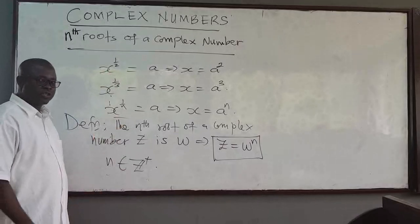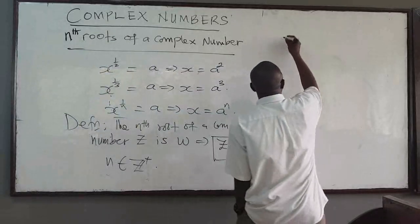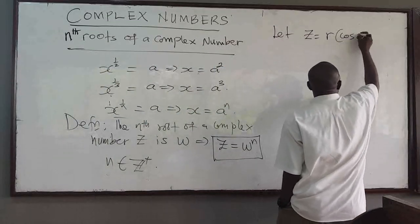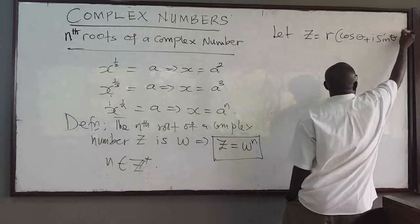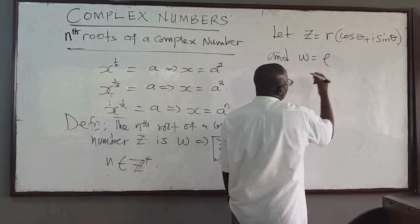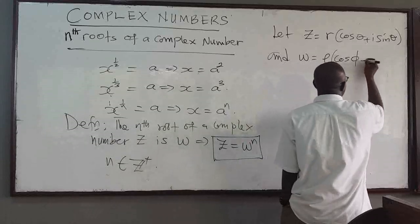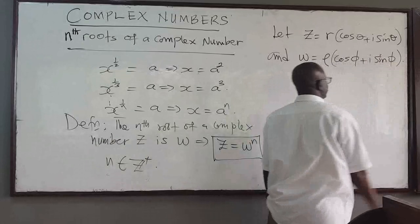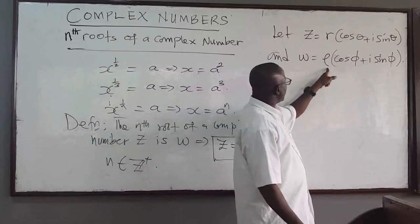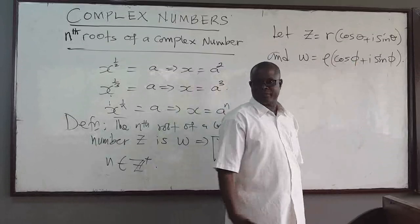So how do we find the nth root of the complex number z — in other words, how do we get w? We let our complex number z be given by r times cosine of theta plus i sine of theta, where r is the modulus. And we let w equal some other complex number rho times cosine of phi plus i sine of phi, where we don't yet know rho and phi — we have to find them. Once we know rho and phi, we have our w.